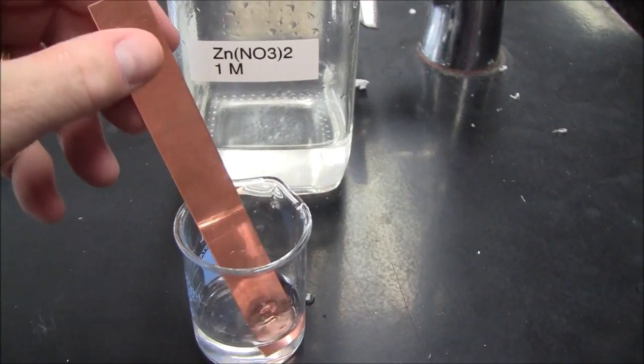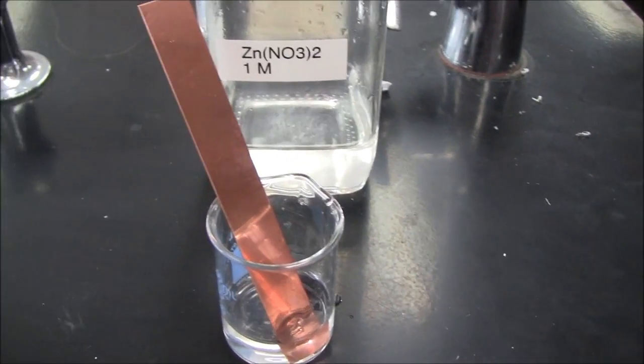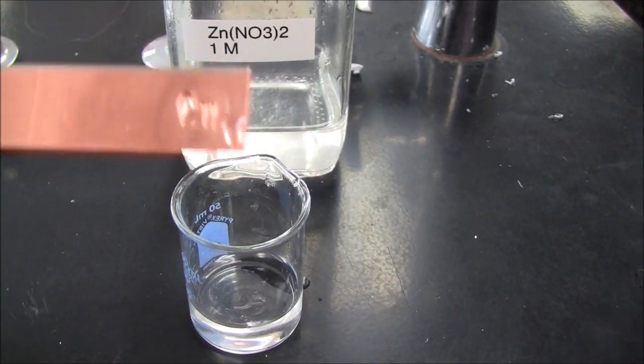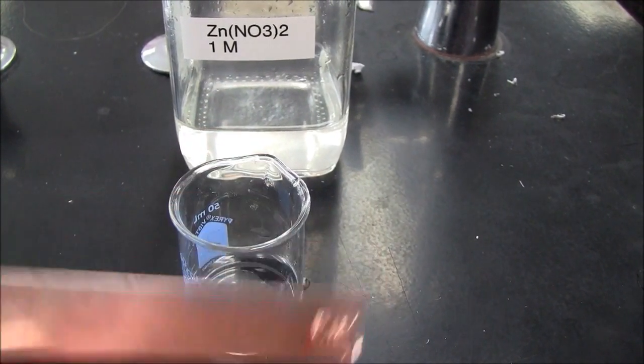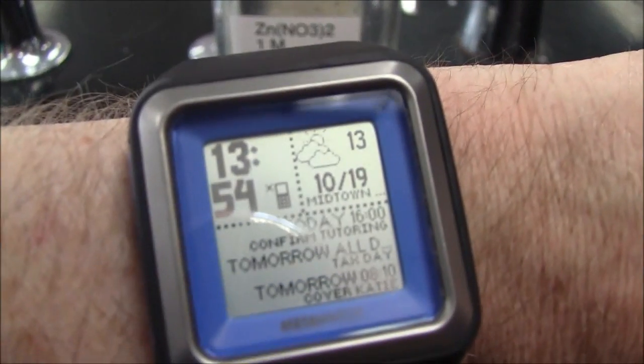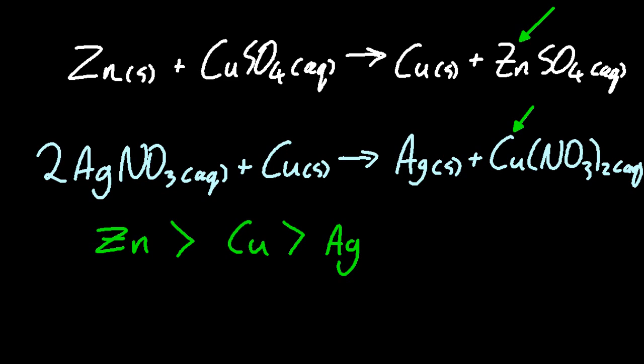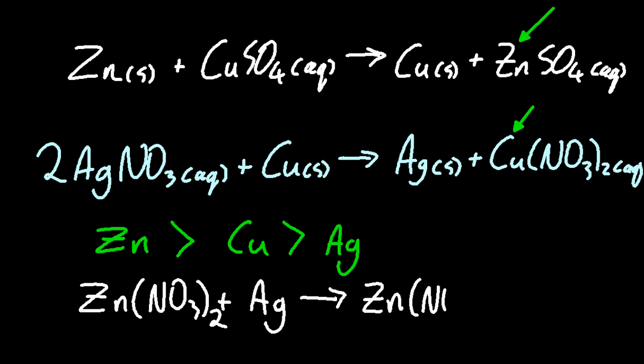So zinc nitrate and copper, no reaction, as expected. Because zinc is higher on the activity series than copper. Maybe I should buy an Apple Watch, but I do like this one. So what if I added zinc nitrate to silver? Well, let me make the most reactive end up as an ion. I know that zinc is more reactive than silver. So you know what? Nothing changes. The zinc nitrate and the silver are unchanged. So that's no reaction. Nothing will happen if I mix those two together.